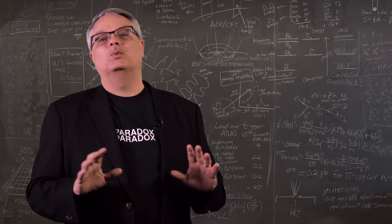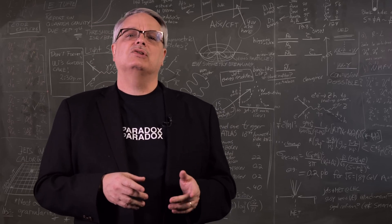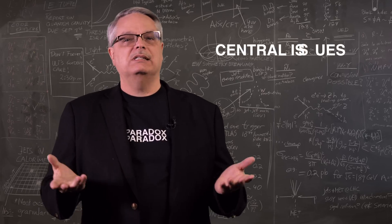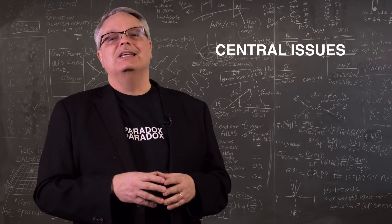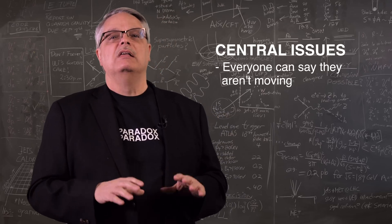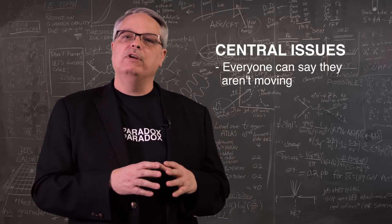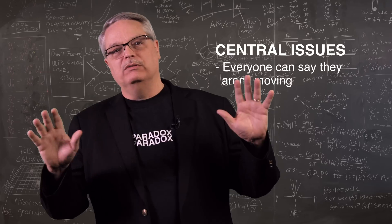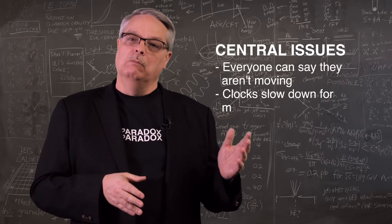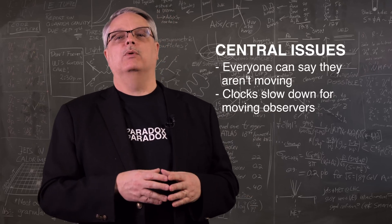So the twin paradox. What's that all about? Let's start by explicitly stating the two core reasons that this seems so paradoxical. First, is that all observers can completely accurately claim that they're the single unmoving person in the universe and everyone is moving around them. And the second thing is that moving clocks tick more slowly than stationary ones.